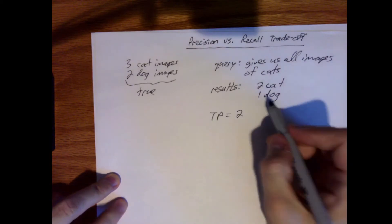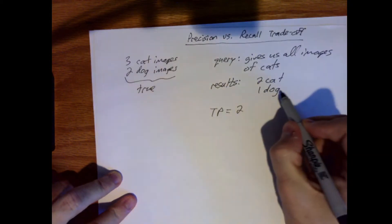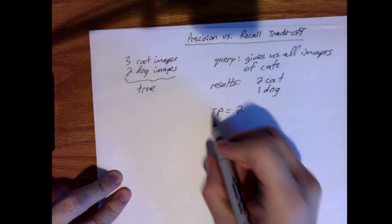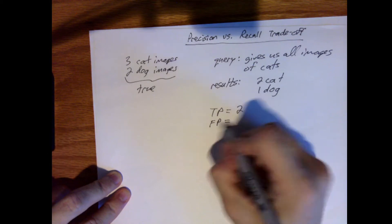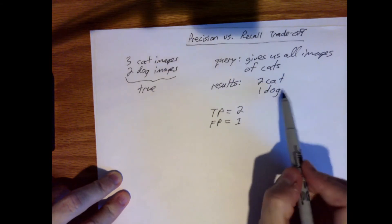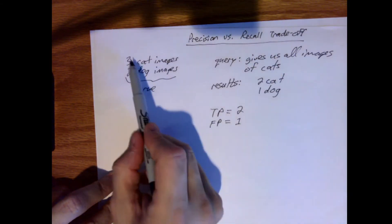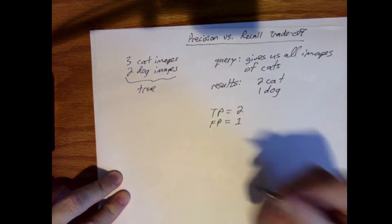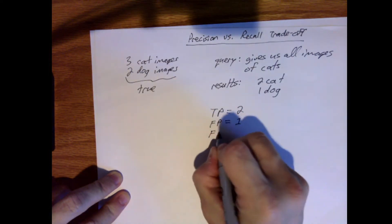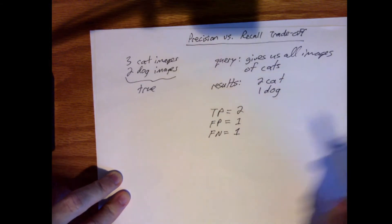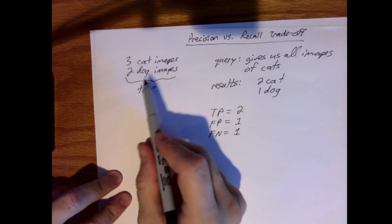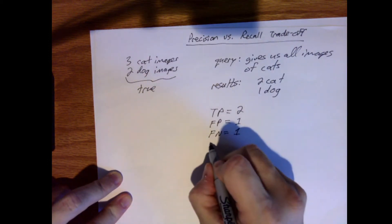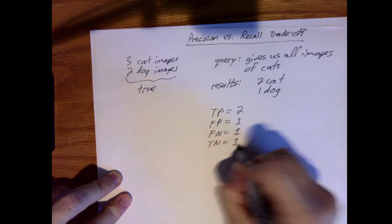Since one of the values that was returned misclassified as a cat was really a dog, our false positive value is one. Now we were given two of the three possible cat images, so that means one cat image was misclassified as not being a cat. So our false negative value is one. And then the other dog image was correctly classified as not being a cat. So our true negative value is also one.